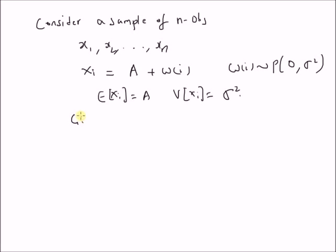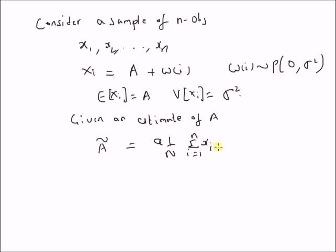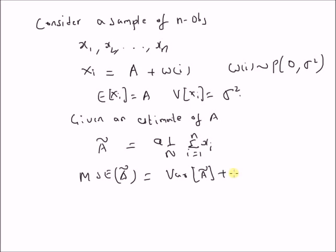Given an estimate ã defined as a times (1/n) Σ(i=1 to n) xi, where lowercase a is the unknown parameter, our goal is to find an estimate of a. This can be accomplished by minimizing the mean square error of ã, which is defined as MSE(ã) = variance of ã plus bias of ã squared.